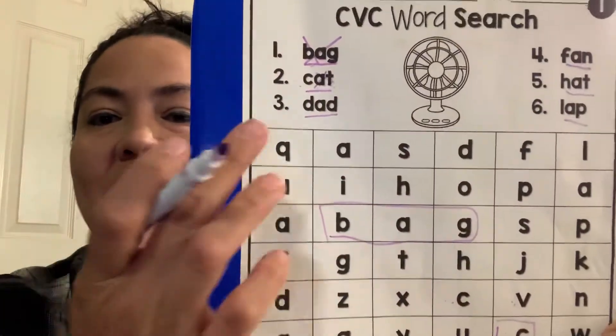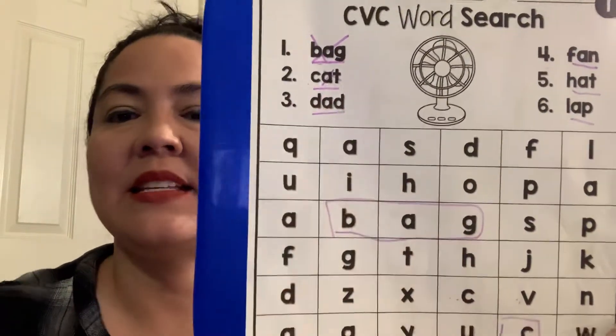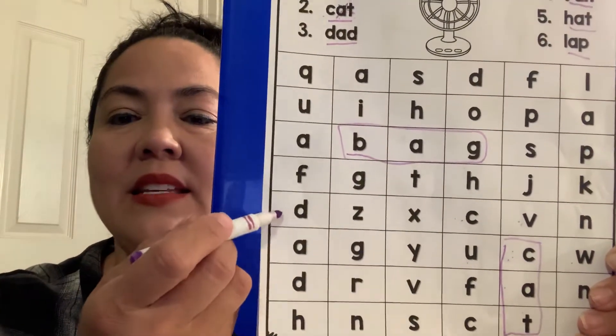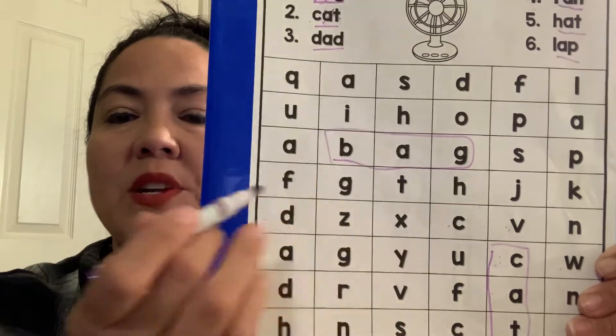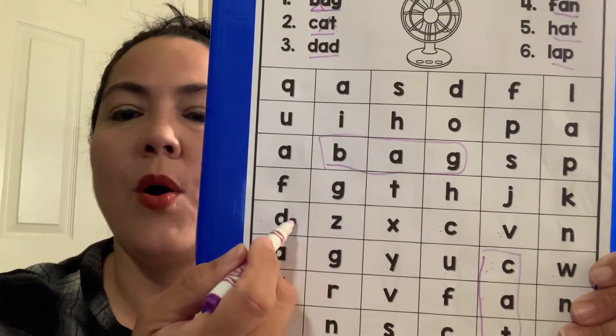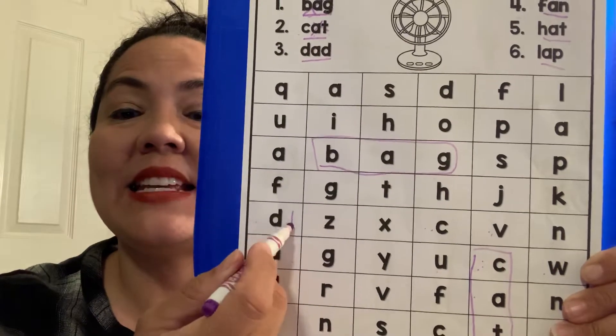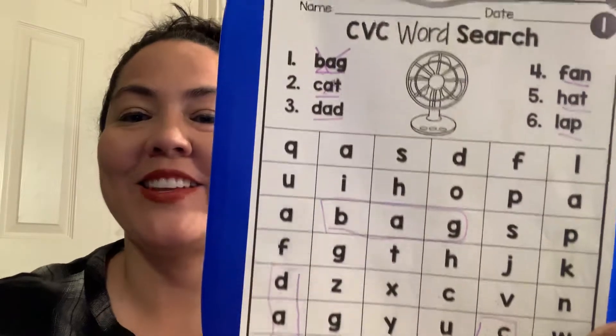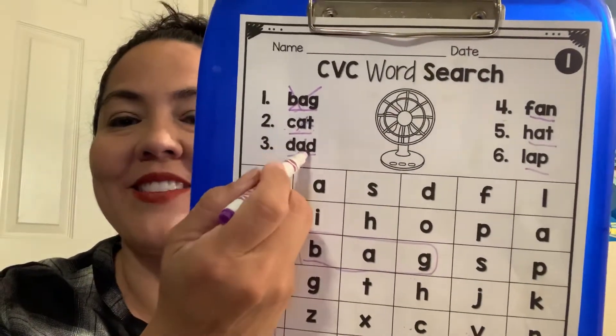Then the one after that is d-a-d. Dad. Do we see any d's? Miss Lisa does. And then where's the a? Do we see an a over here? Nope. What about down here? Yes. D-a-d. Good job, guys. You guys have some bright eyes.